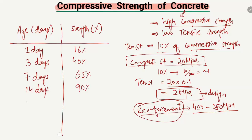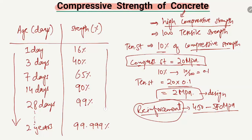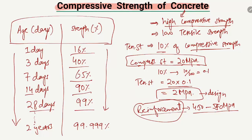With 14 days, the concrete achieves 90% of its strength. With 28 days, we assume the concrete achieves approximately 99% strength. Beyond that, with months and years — two, three, or five years — the concrete continues to gain strength but can never achieve 100%. So to summarize: 1 day = 16%, 3 days = 40%, 7 days = 65%, 14 days = 90%, and 28 days = 99% strength.